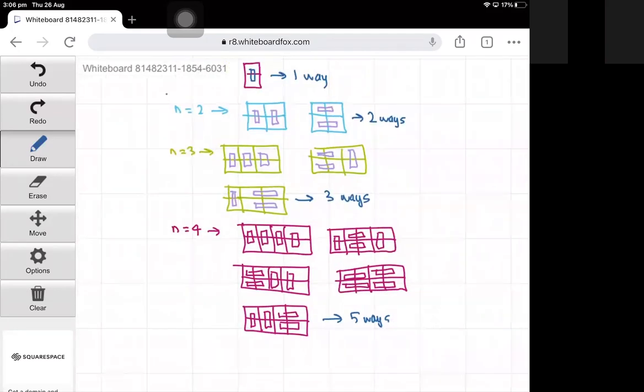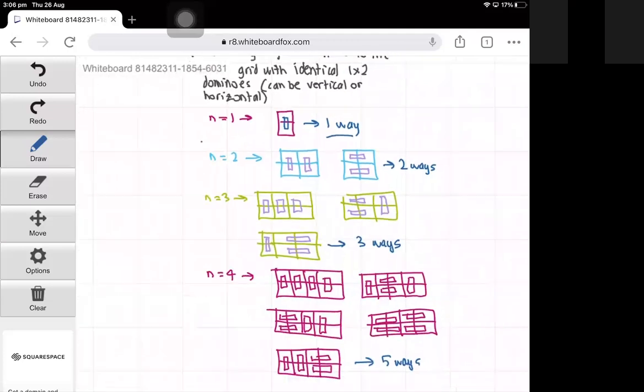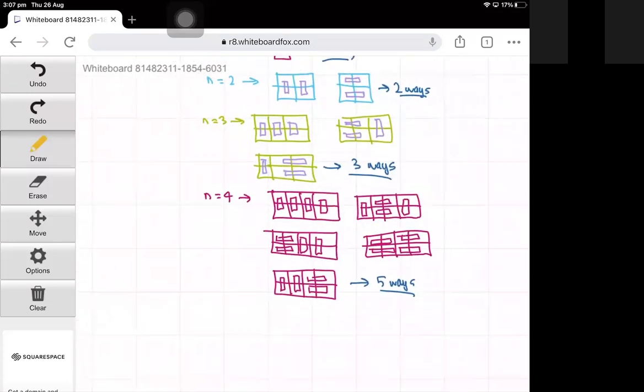Let's have a look at what pattern we have so far. We have n equals 1 corresponds to 1, 2 goes to 2, n equals 3 goes to 3, but n equals 4 jumps up to 5. So you might be thinking what type of sequence goes 1, 2, 3, and then 5.